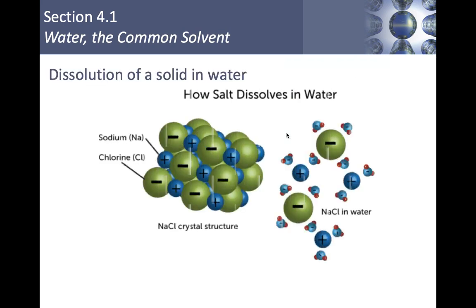When thinking about the dissolution of a solid in water, the most common example is salt. We have sodium ions — little positively charged blue things — and chloride ions, which are negatively charged green things (chloride is a lot bigger, by the way). When salt dissolves, notice what the water molecules are doing: the negatively charged chloride is attracted to the hydrogens (positive part of water), and the positively charged sodium cation is surrounded by the oxygens (negative part). That's why ionic substances like salt dissolve so easily in water.